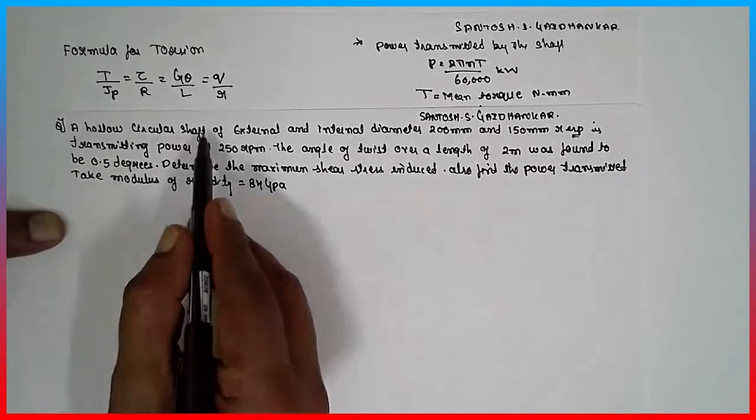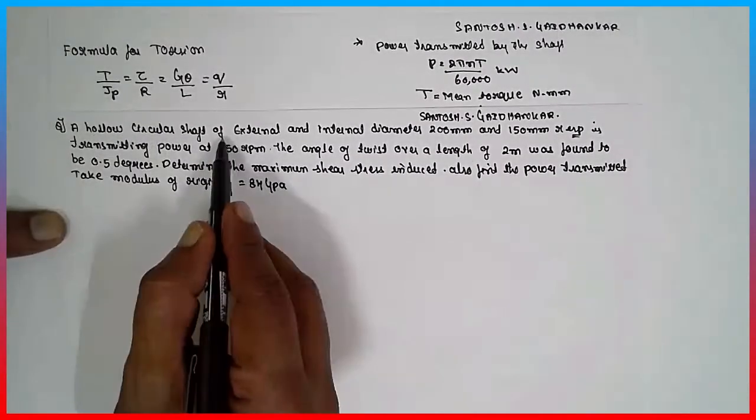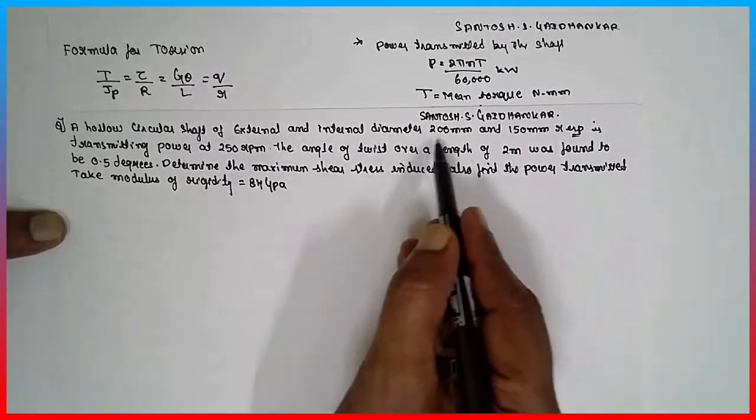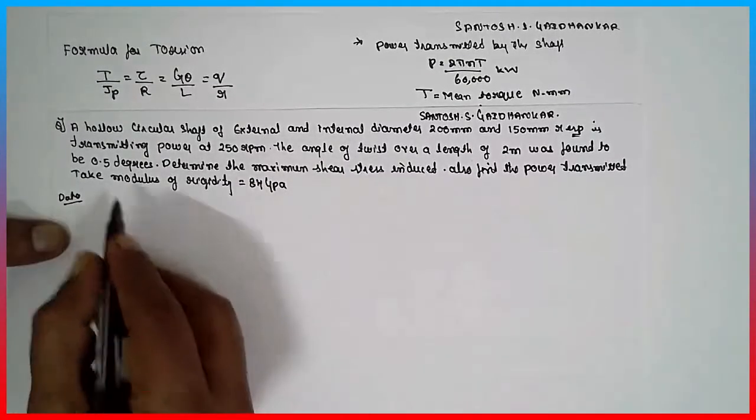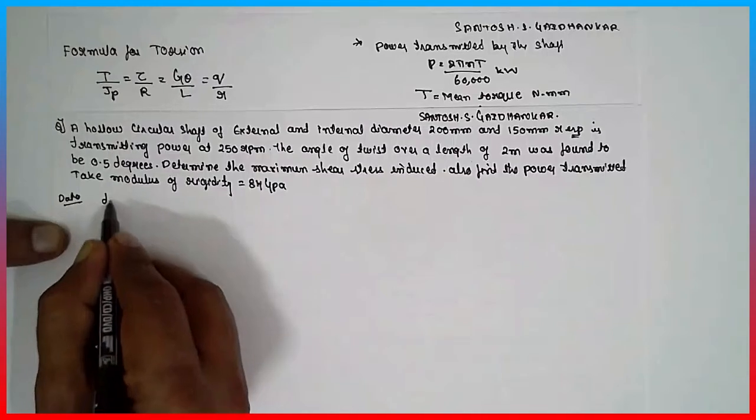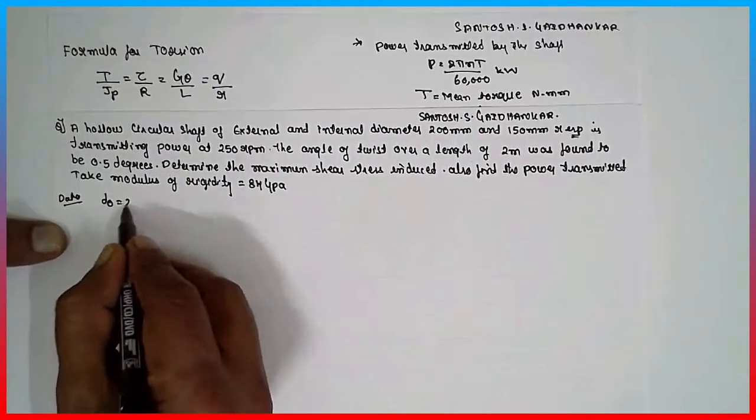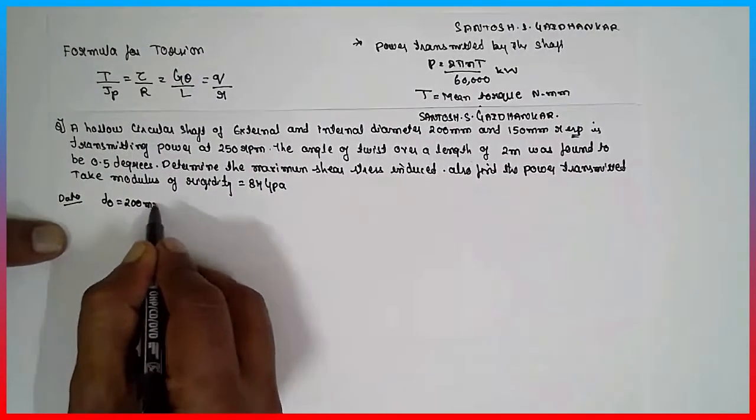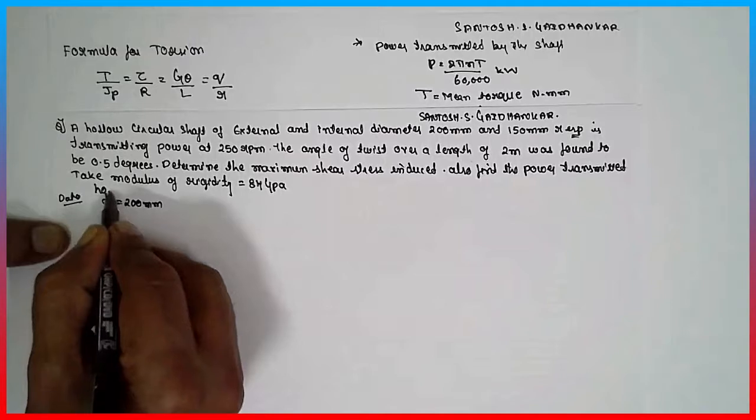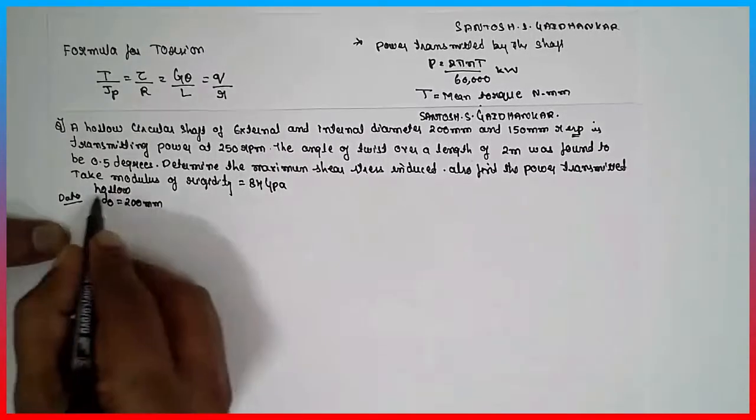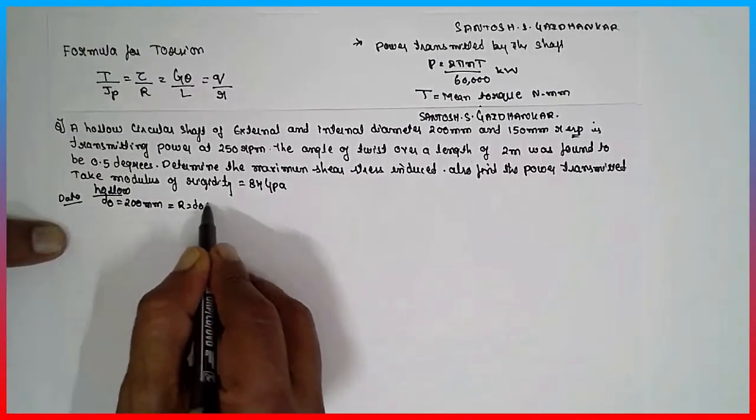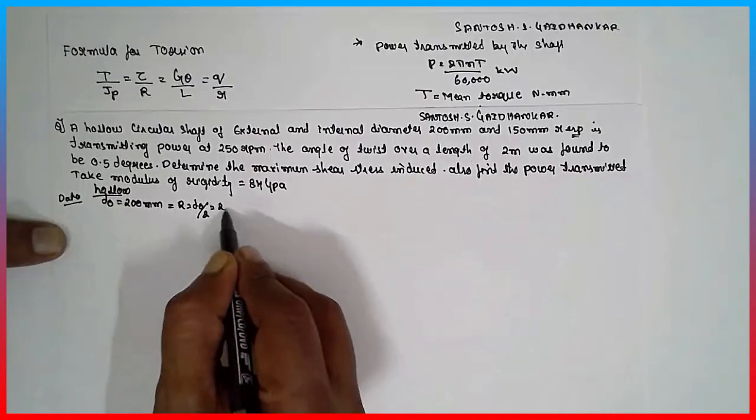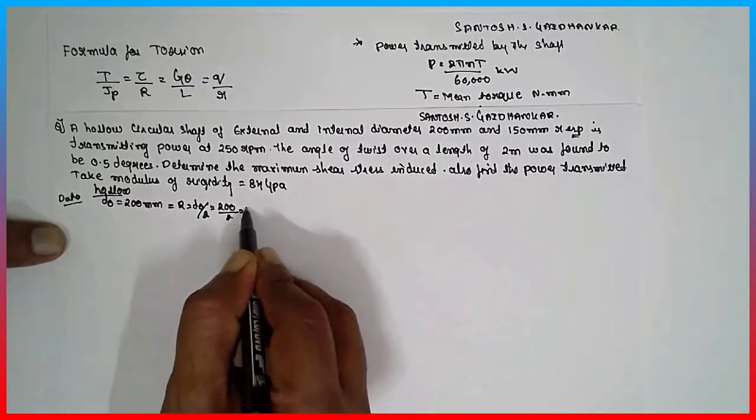A hollow circular shaft of external and internal diameter. First they have given internal and external diameter, that is D₀, 200 mm. It is a hollow part. Therefore you have to consider R is equal to D₀ by 2, 200 divided by 2 is nothing but 100 mm.